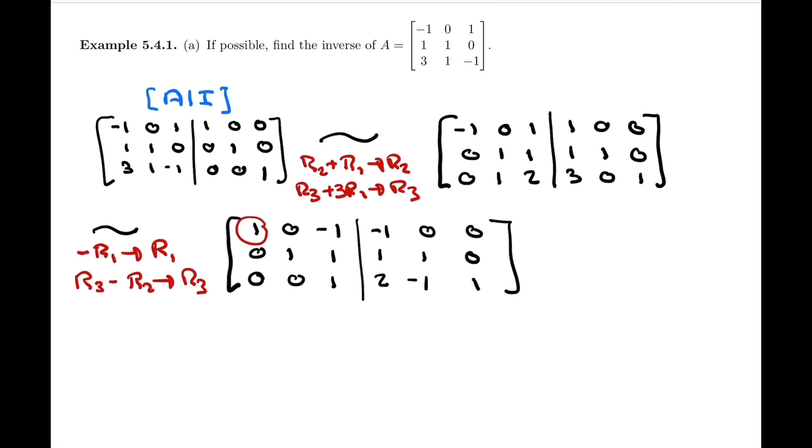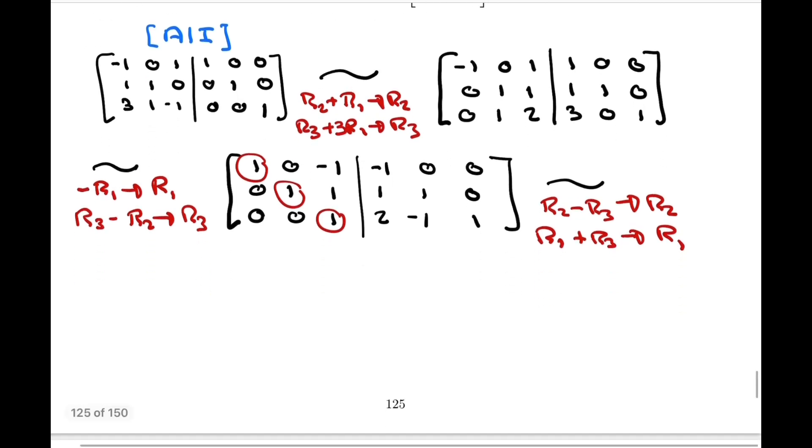Remember the Gaussian algorithm - we have our leading ones. We worked all our way down the staircase, and now we can work our way back up to put zeros above each leading one. So the next operation will be row 2 minus row 3 becomes the new row 2, and row 1 plus row 3 becomes a new row 1.